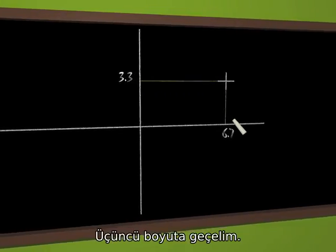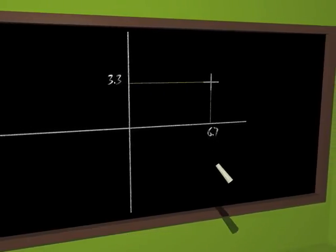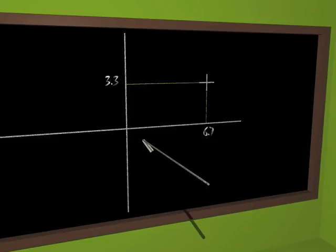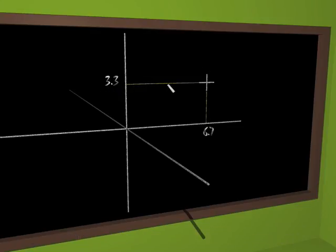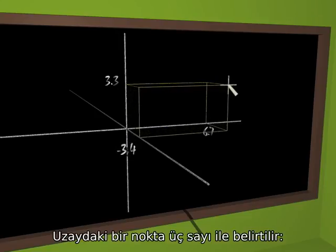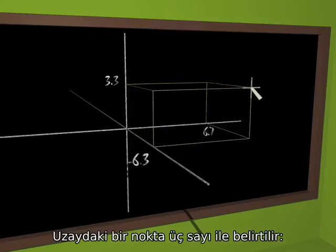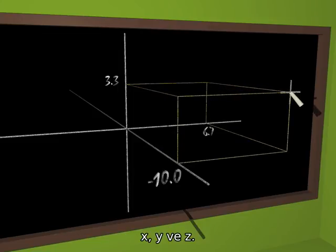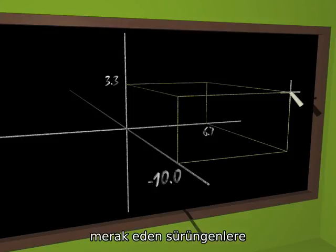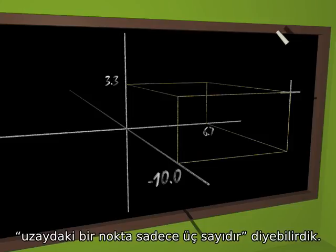Let's go to the third dimension. The chalk now writes in the air, and draws a third axis, perpendicular to the two previous ones. A point in space is described by three numbers, x, y and z. One could say to the reptiles that are curious to know about our world: a point in space is just three numbers.